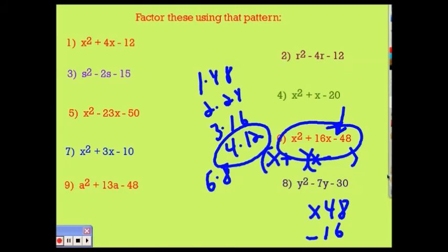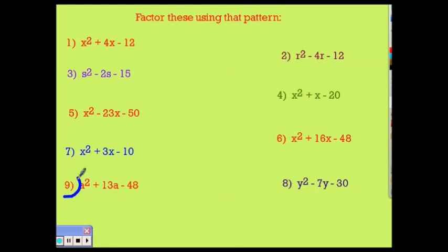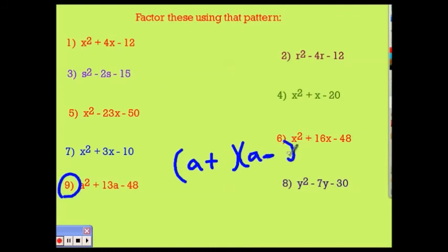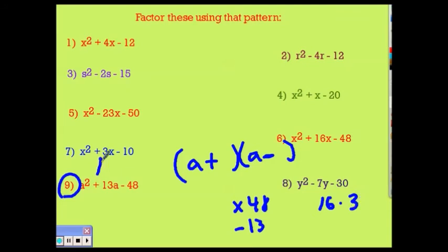Now number 9. I'm looking for two numbers that multiply to 48 and subtract to give me 13. I remember from before: 16 and 3 — those definitely subtract to give me 13. And since I want my middle term to be positive, I put the big number with the plus. This is my solution.